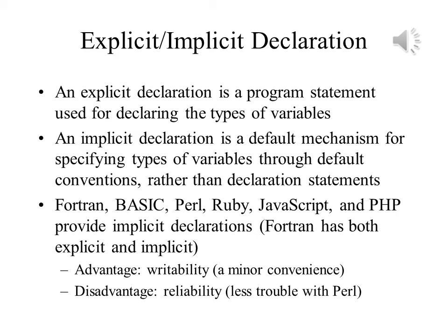Implicit declarations use a default mechanism where the data type is determined by some association between the variable's name and its type. For example, in Fortran, variables beginning with the letters I, J, K, L, M, and N are integers unless declared explicitly, while variables whose names begin with other letters are real unless declared explicitly. Similarly, the special character in front of a variable's name in Perl determines if it is a scalar, an array, or a hash. Implicit declarations carry the benefit of being more writable, but they can lead to reliability problems if not used or tested properly.